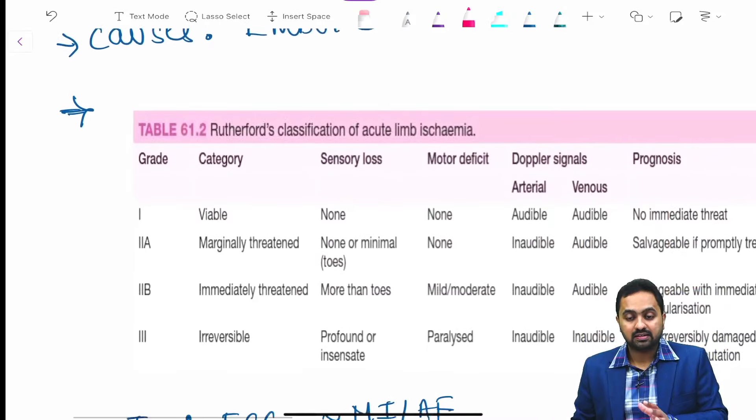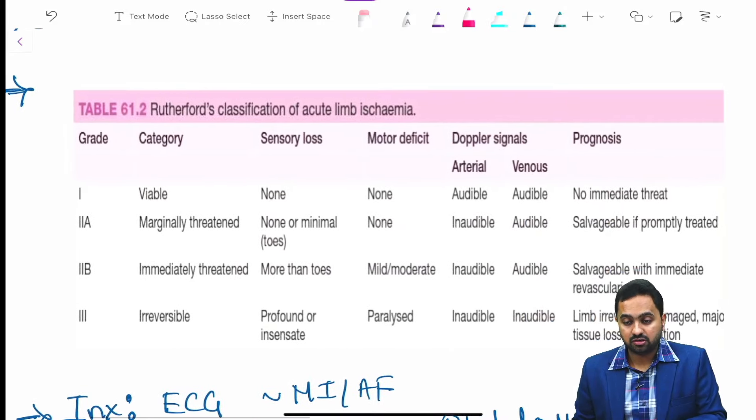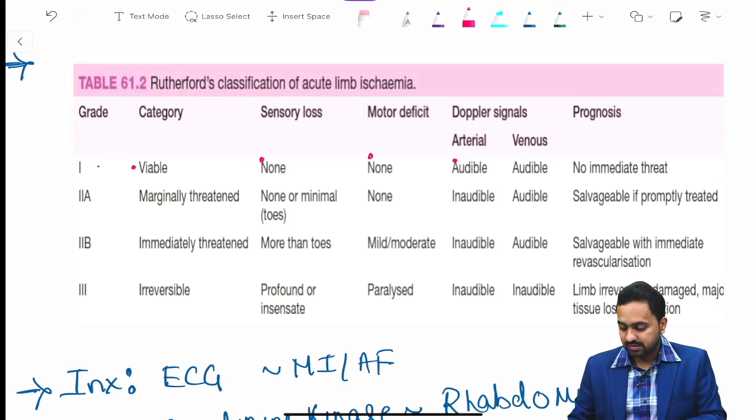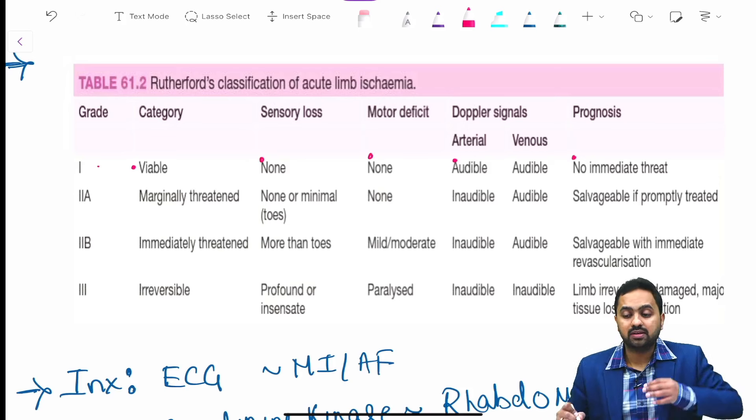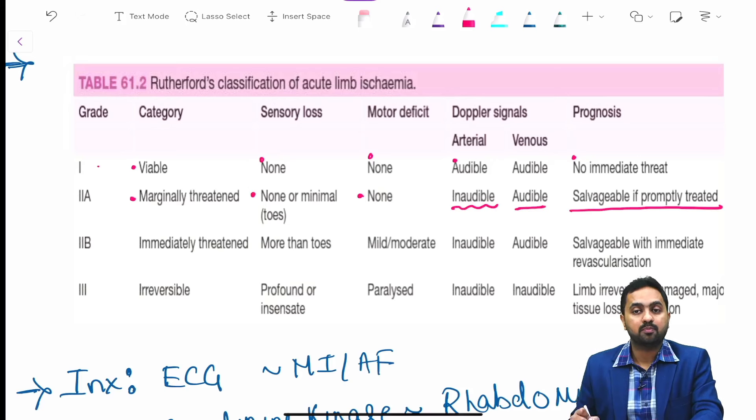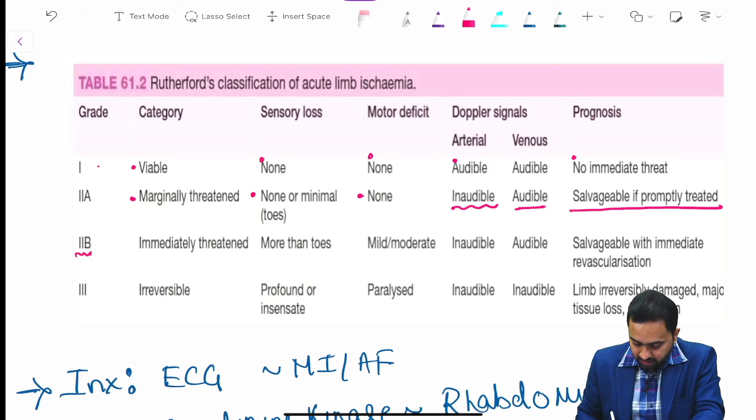We have the Rutherford classification of acute limb ischemia. Grade 1 is viable: no sensory loss, no motor deficit. Doppler signals are audible and there is no immediate threat. Grade 2a is marginally threatened: minimal sensory loss, no motor deficit. Arterial sounds inaudible, venous audible, salvageable if promptly treated.